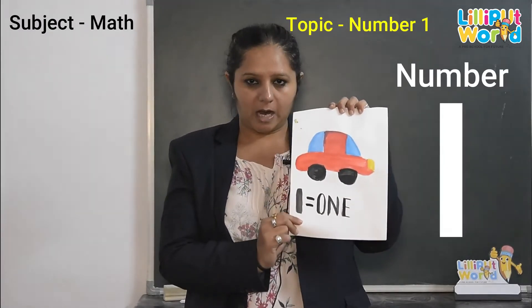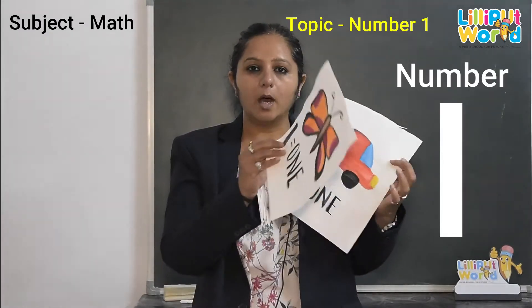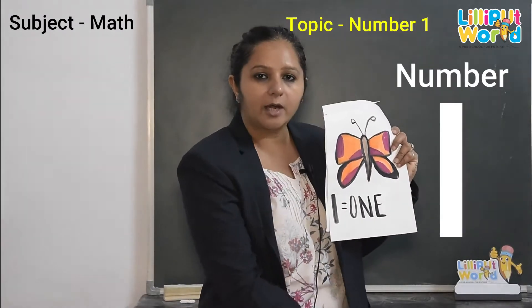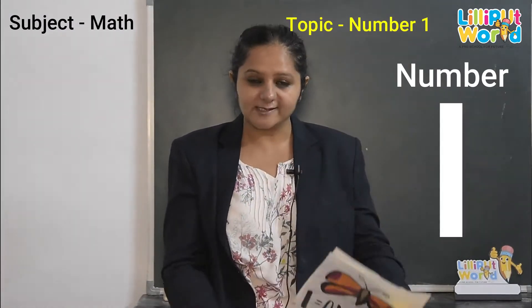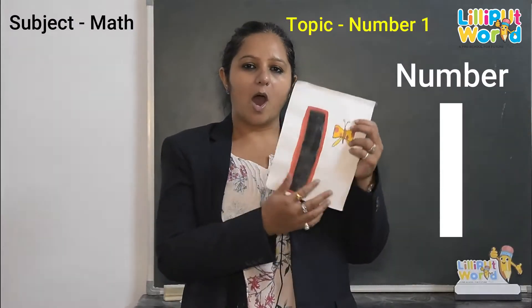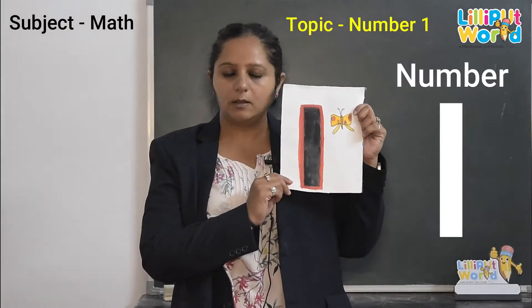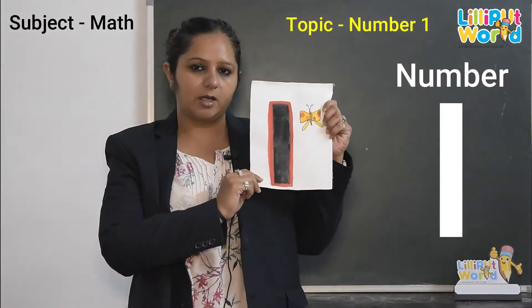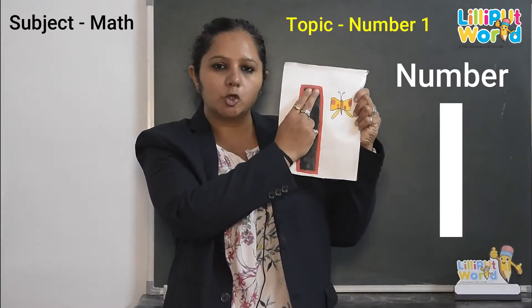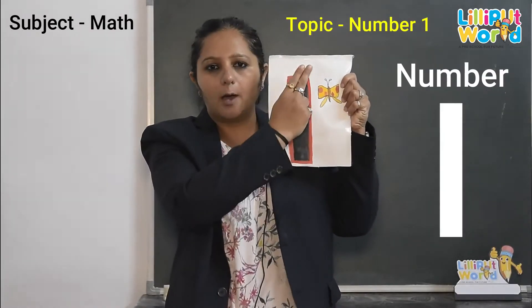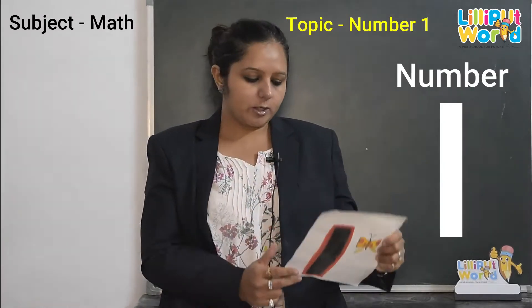1 butterfly and 1 fish. And this is our 1 number. Let's trace again. Okay? Up to down. Up to down. Okay?